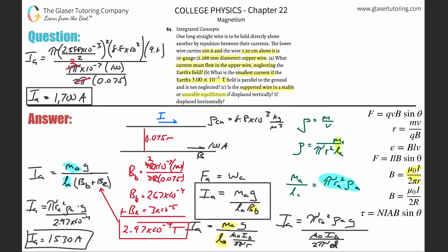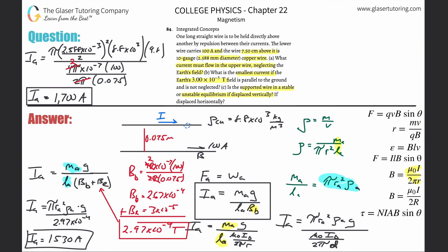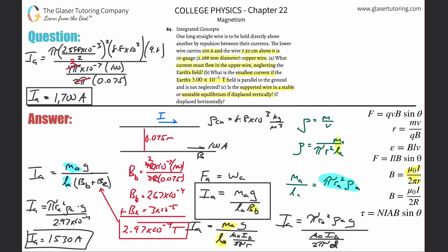Is the supported wire in stable or unstable equilibrium if displaced vertically or horizontally? If displaced vertically upward, the magnetic field produced by wire B decreases while the weight stays constant, so the net force pulls the wire back down — stable equilibrium vertically. If displaced horizontally, the force is no longer evenly balanced along the wire's length, causing rotation — that's unstable equilibrium horizontally. Thanks for tuning in. Please subscribe and I'll see you in the next chapter.